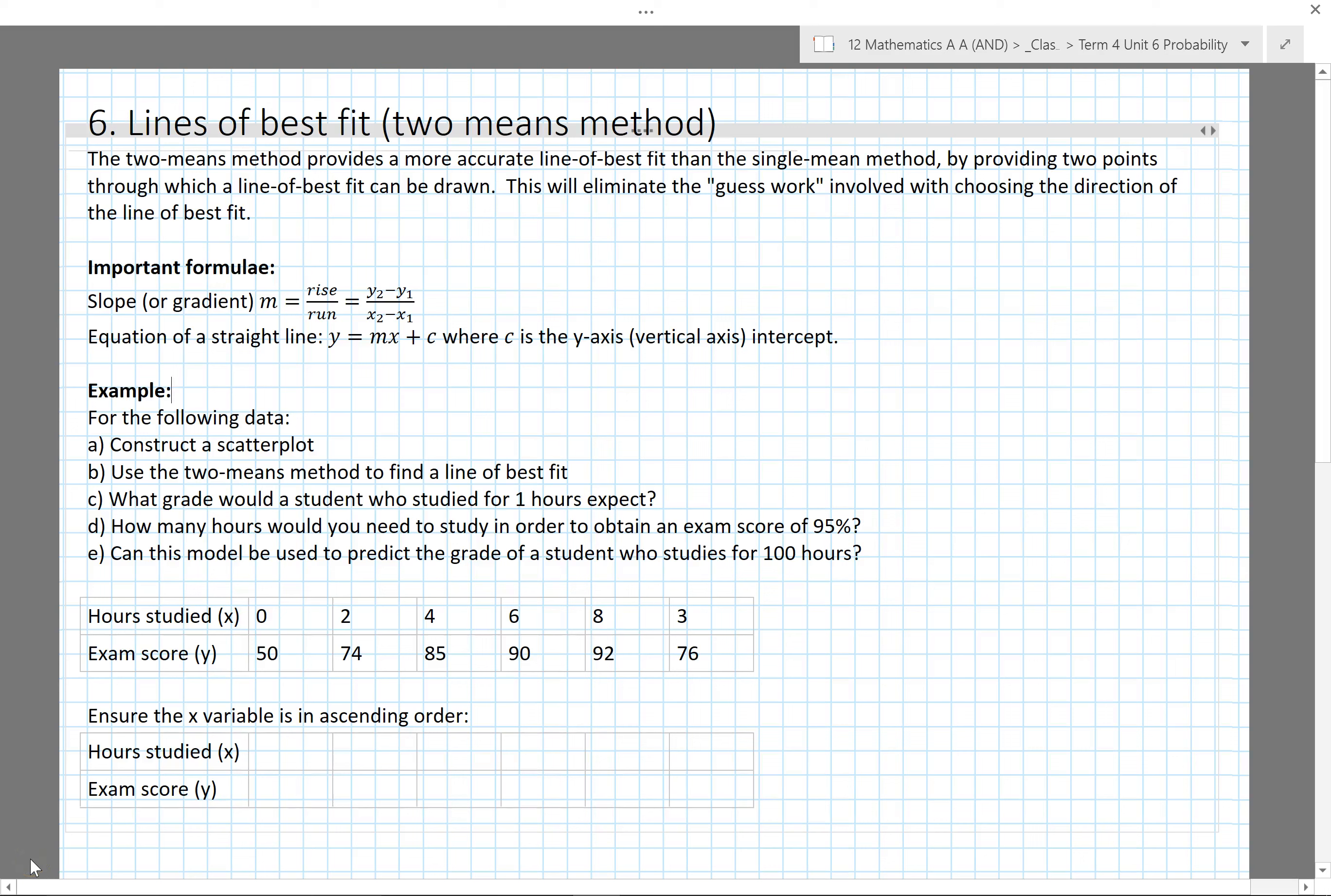This lesson is about lines of best fit using the two means method. It provides a more accurate line of best fit than the single mean method. The single mean method was just finding the average of your data and then guessing where the line of best fit should be. This method will eliminate that guesswork with choosing the direction or the gradient of the line of best fit.